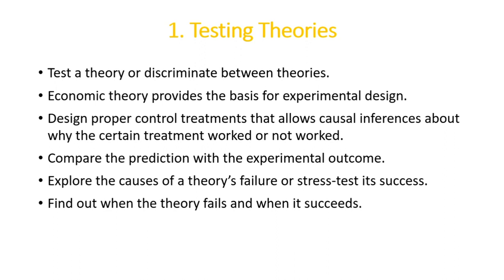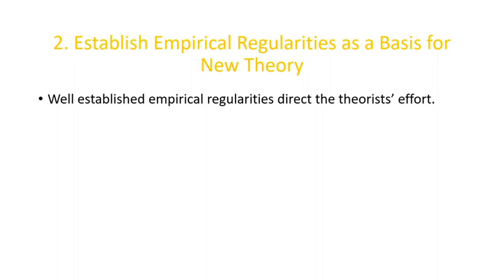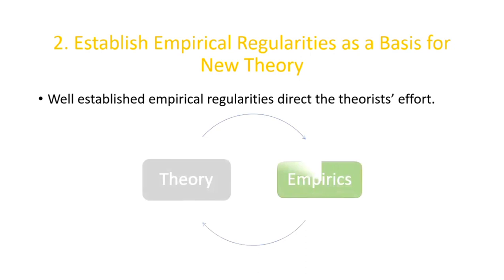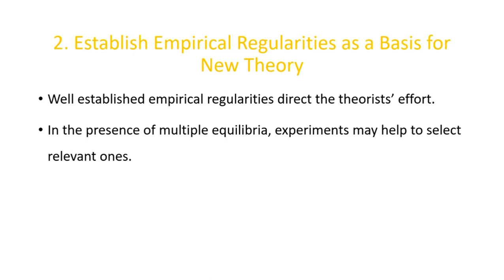Next is to establish empirical regularities as the basis of new theory. If we repeat experiments and each time get similar outcomes, these well-established empirical regularities direct theorists' efforts. That is, just as theory is used to update empirics, empirical findings are also used to update theories. And in the presence of multiple equilibria, which is common in repeated games, experiments may help to select the relevant ones. Experiments also allow us to go beyond the present state of the art in theory.